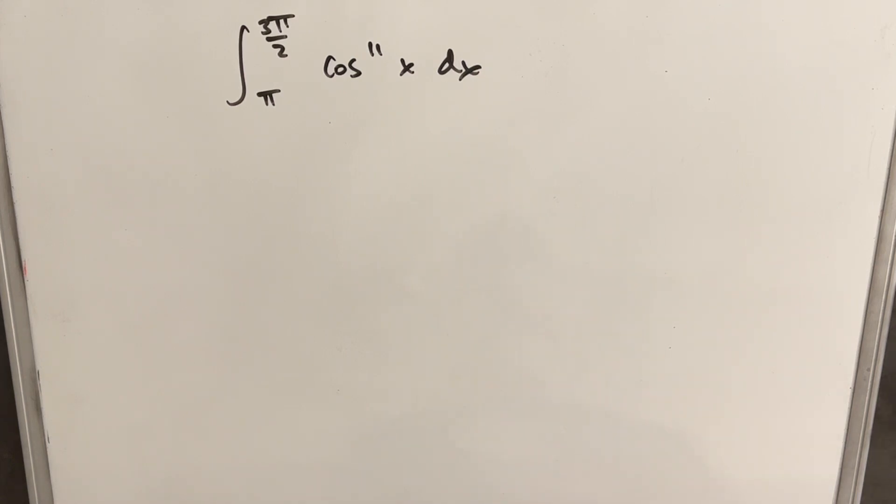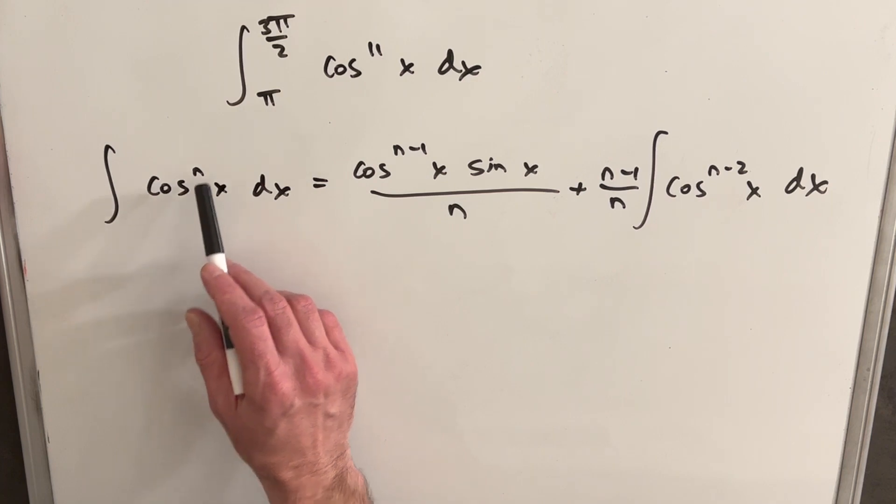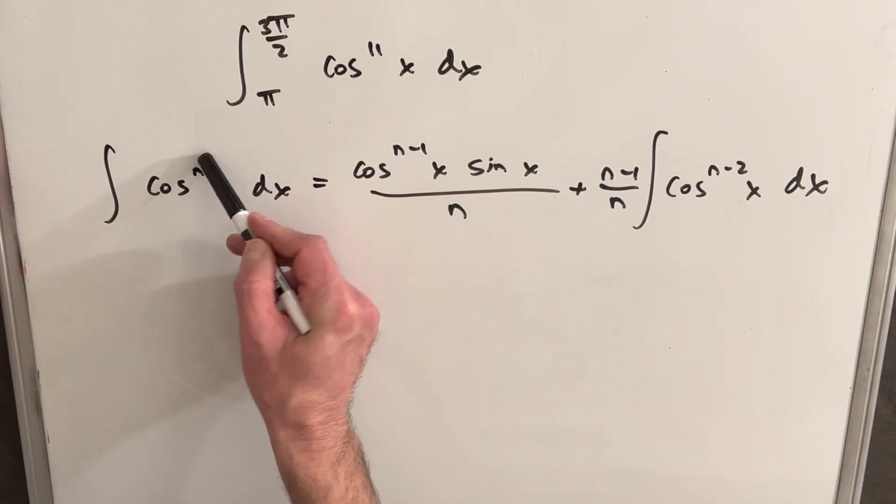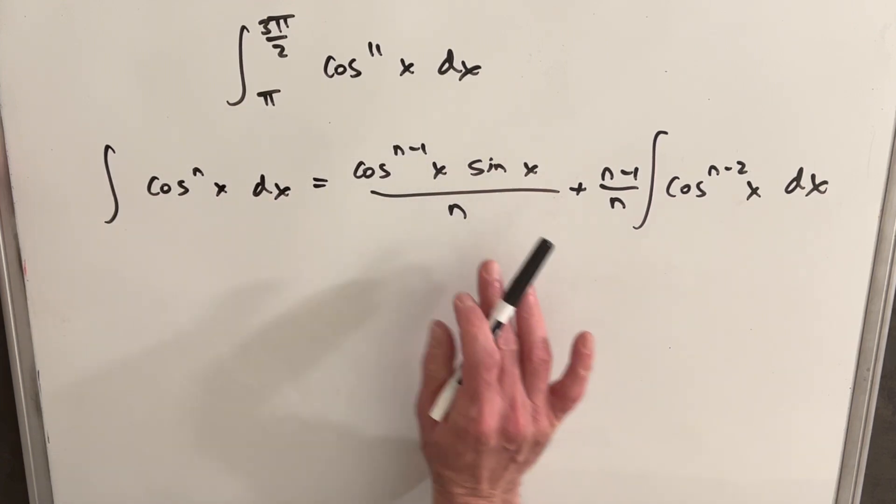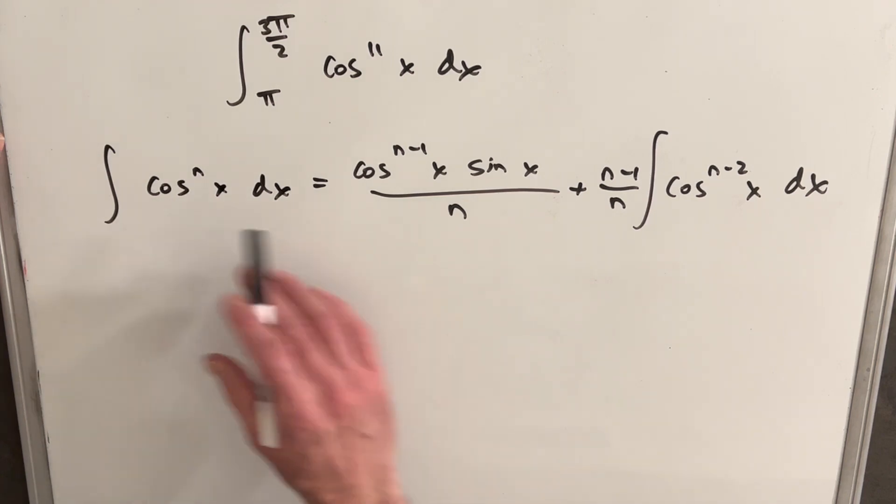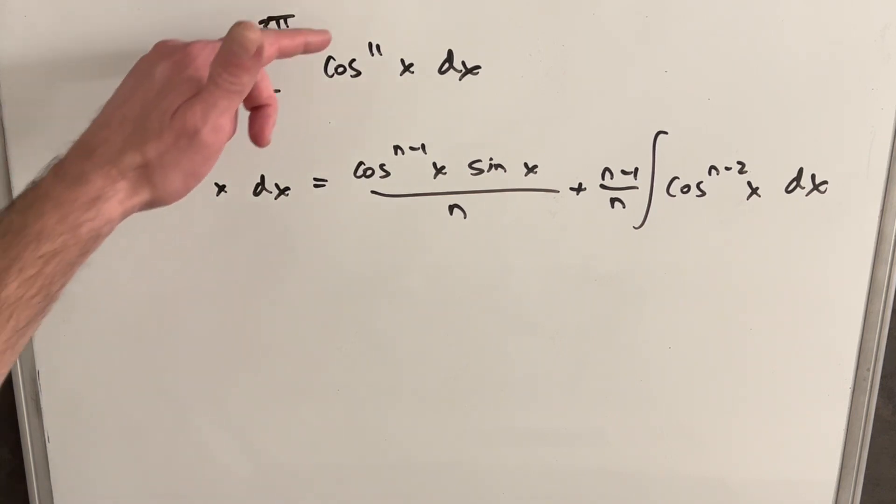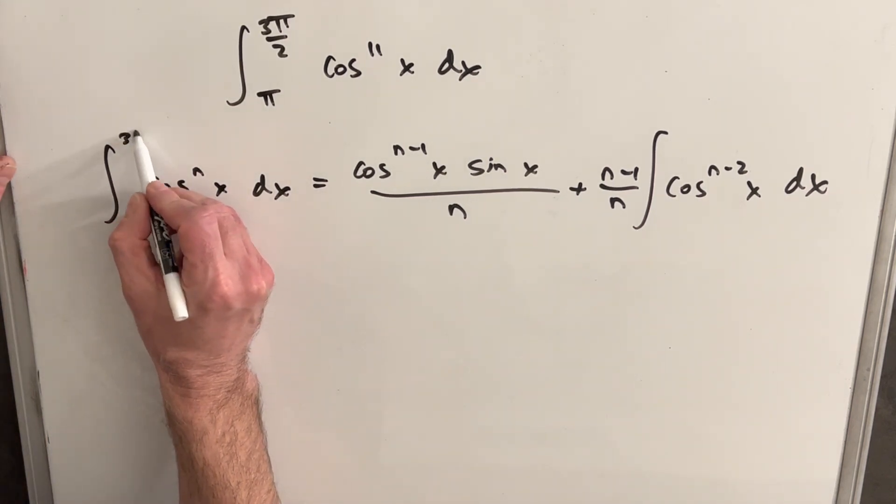So what we want to look at is the power reduction formula for cosine. And here's that power reducing formula on the board here. I derived this in a previous video, so I'll give a link in the description, but I'm not going to go over the derivation today. And so what this would allow us to do is, our n in this case is going to be 11. So we could plug all this stuff in, plug our 11 in for everywhere you see an n. We'd have 10 over 11 here, and then we'd have the cosine of 9. Then we could repeat that, and we could do it on cosine of 9, and we'd get the integral of cosine of 7. Now, we could do that, but that's going to be very long and tedious, and it would get much worse if cosine was like 100 or 1,000.